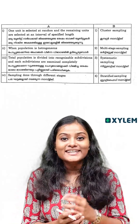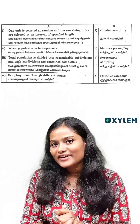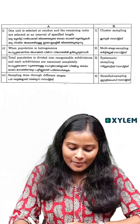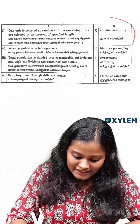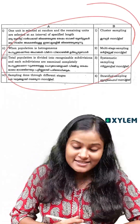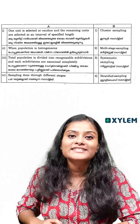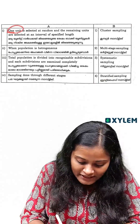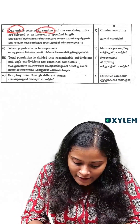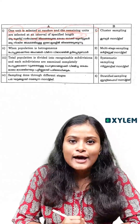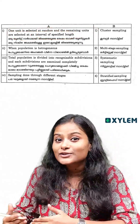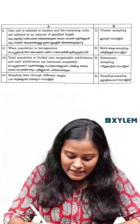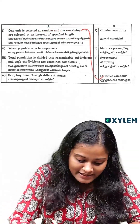Hello, in a minute we have two maths following set. Here we are looking at sampling techniques in the first chapter. One unit is selected at random and the remaining units are selected at an interval of specified length. We are doing systematic sampling.